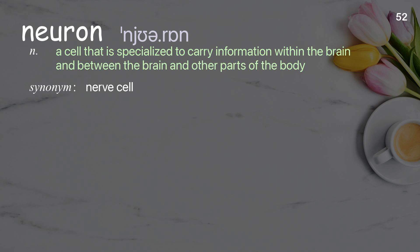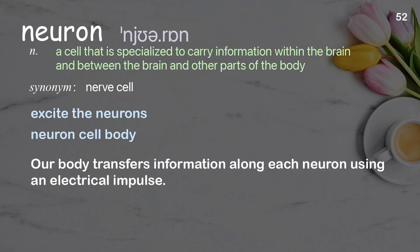Neuron: a cell that is specialized to carry information within the brain and between the brain and other parts of the body. Examples: excite the neurons, neuron cell body. Our body transfers information along each neuron using an electrical impulse.